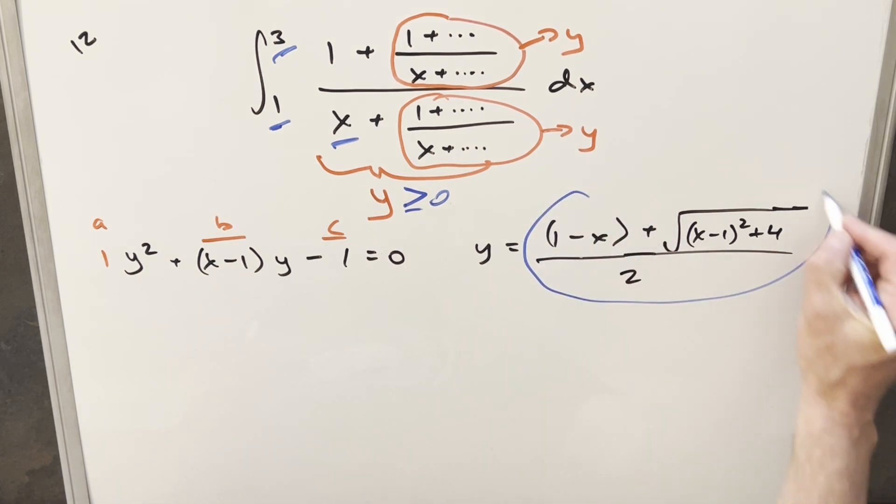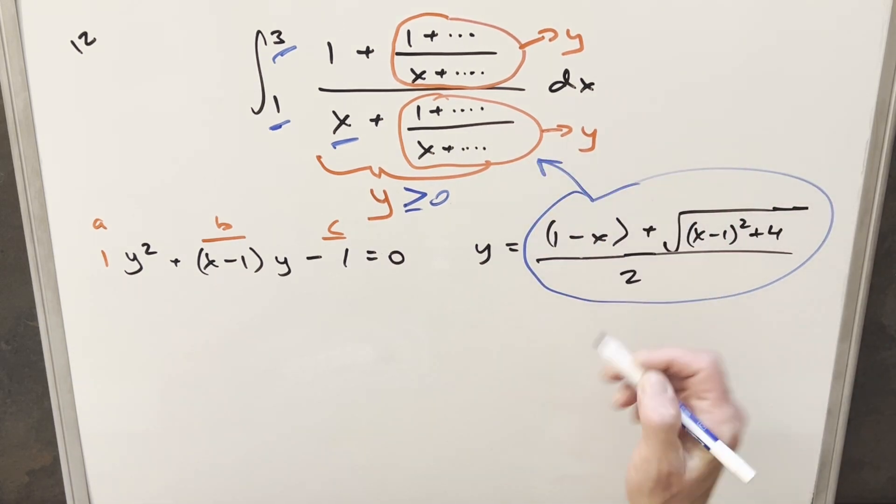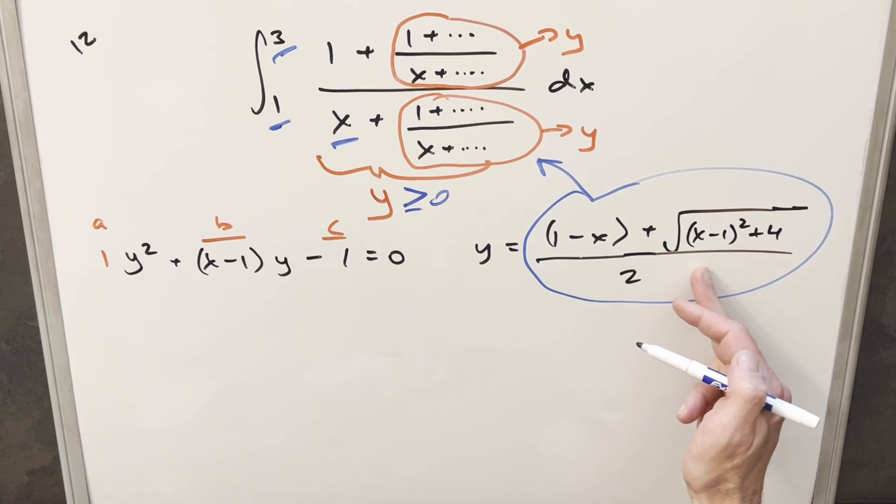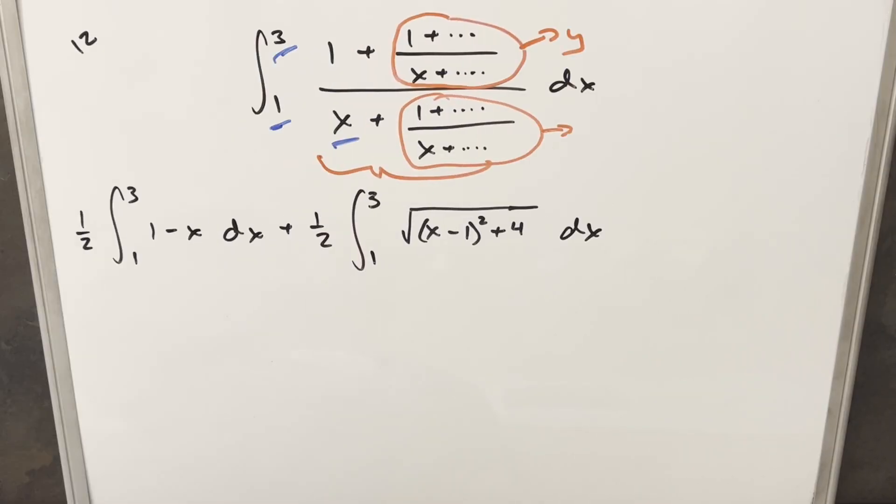But now that we've found our y value, we can just take this and we can plug it back into the integral. And what we can do is try to integrate this thing, which should be easier to deal with. So now with the rewrite, I took the y that we found on the other board, and I've actually split this up into two integrals.